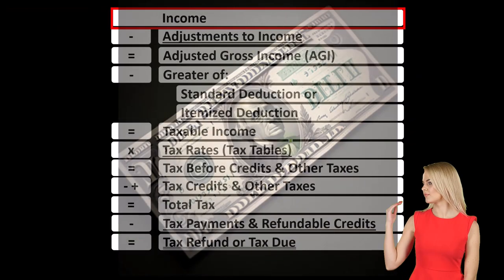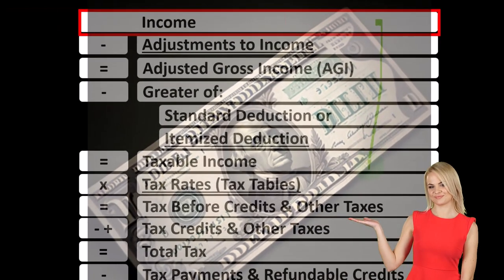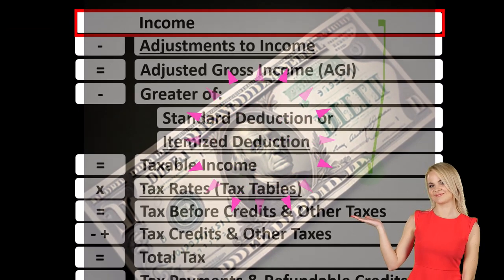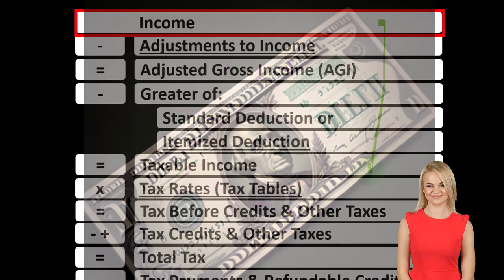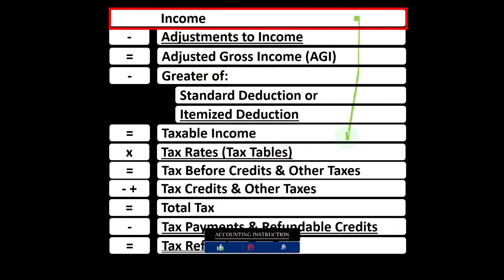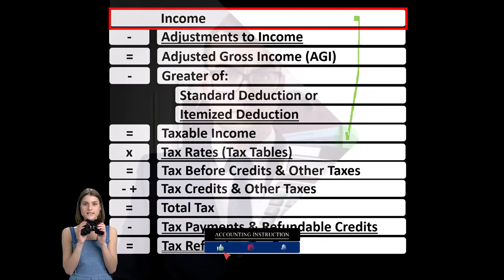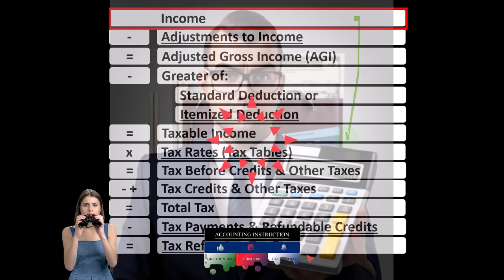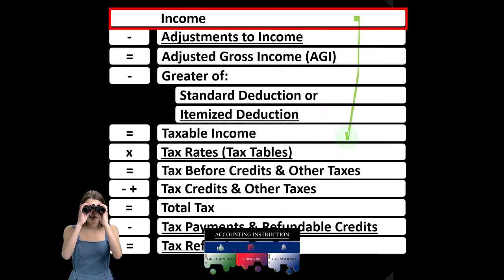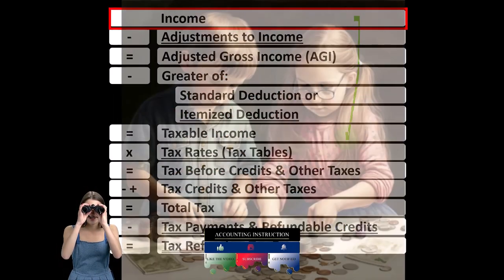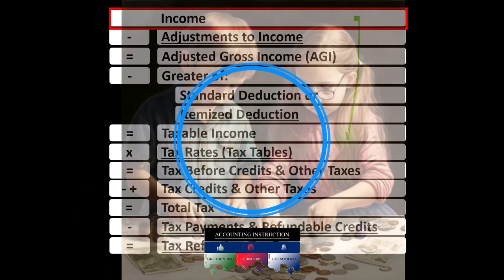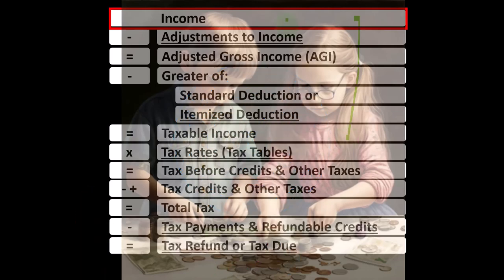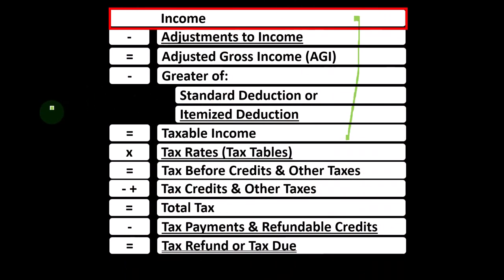Looking at the income tax formula, we're focused on line one: income. The first half of the income tax formula is in essence an income statement, just an outline or scaffolding with other forms and schedules flowing into it. One of those is the Schedule C, in essence an income statement with business income minus business expenses, and the net business income flows into line one of our income tax formula.